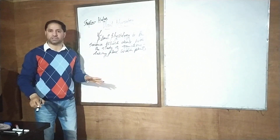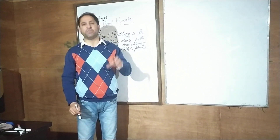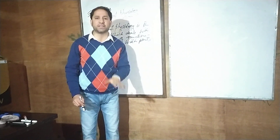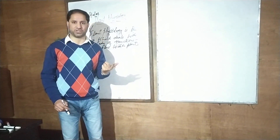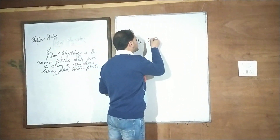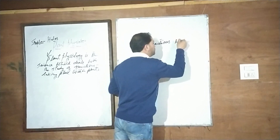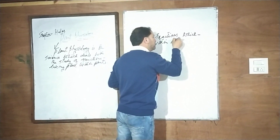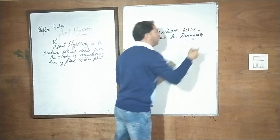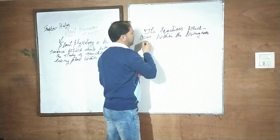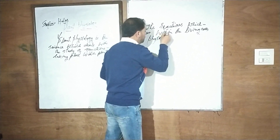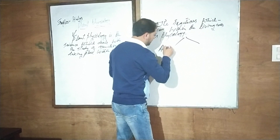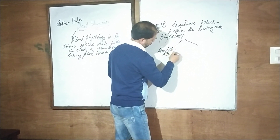Plant physiology deals with functions. What are functions? The reactions which occur within living cells are the functions which are responsible for the survival of living organisms. These reactions are of two types: anabolic reactions and catabolic reactions.